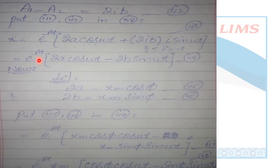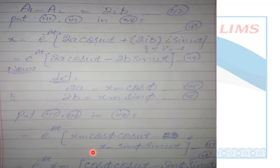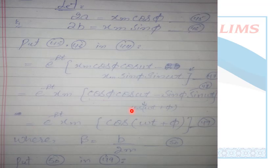We have e to the power minus beta t. We substituted these values and placed them into equation 47. How do we simplify? The xm factor is common in both terms, so we take it out. In equation 48, we have taken out xm, giving us cos φ cos ωt minus sin φ sin ωt.